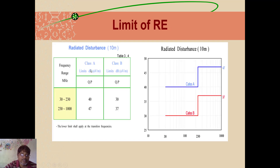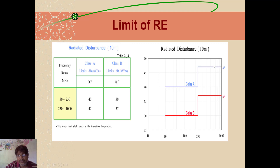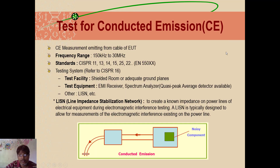There are two types of equipment classifications. Class A is for industrial standards and Class B is for civilian applications. For radiated emission, Class A limits are 40 dB at low frequency and 47 dB at high frequency. Class B limits are 30 dB at low frequency and 37 dB at high frequency, as shown in the figure. For conducted emission, CE measurement: the frequency range is up to 30 MHz, following CISPR standards. Testing facilities are a sealed room or anechoic chamber, with EMC receivers and spectrum analyzers. The common method uses LISN — line impedance stabilization network.